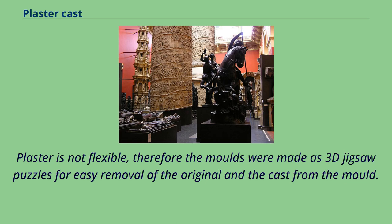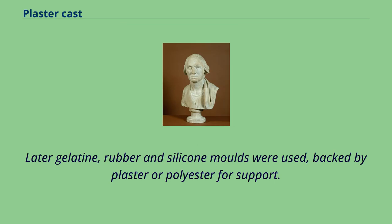Plaster is not flexible, therefore the molds were made as 3D jigsaw puzzles for easy removal of the original and the cast from the mold. Later, gelatin, rubber, and silicone molds were used, backed by plaster or polyester for support.